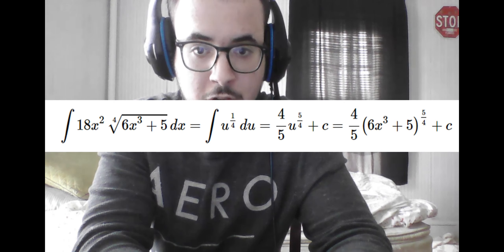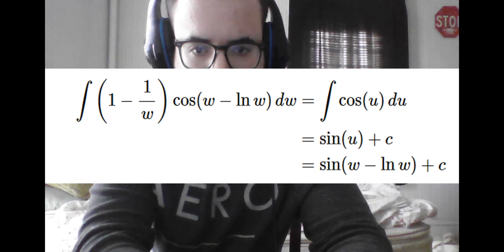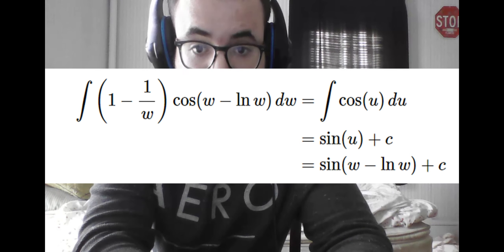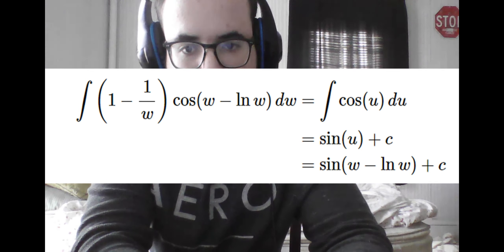If we do another integral to get more practice, we would identify w minus ln of w as the inner function u, take the derivative of it with respect to w, but then multiply by change in w, in order to get change of u by itself in a more convenient manner.